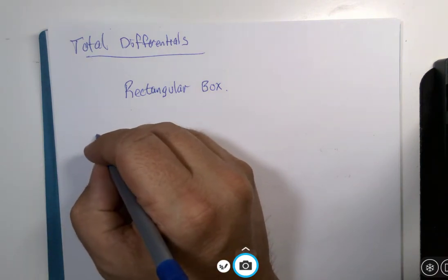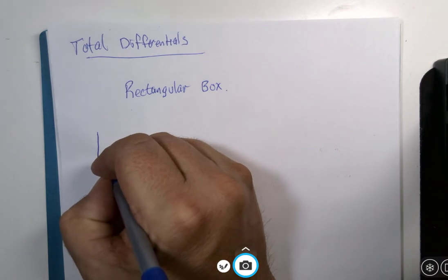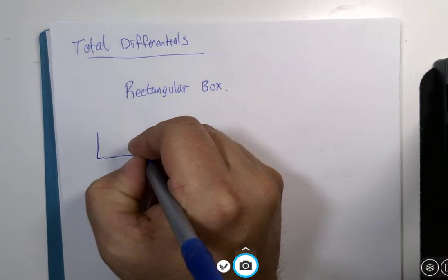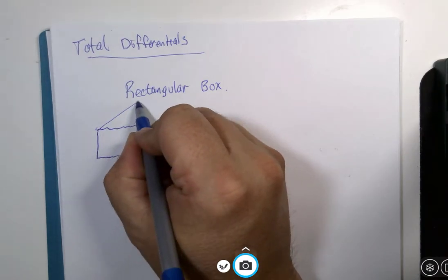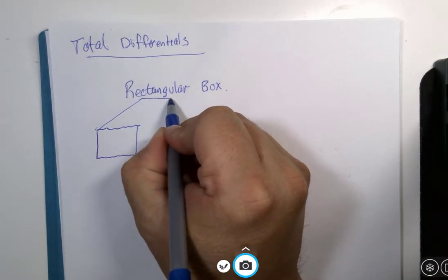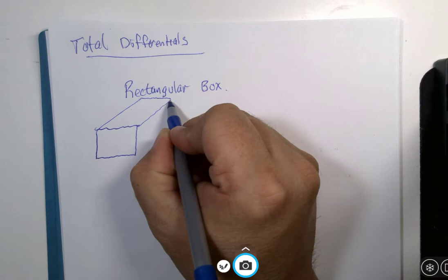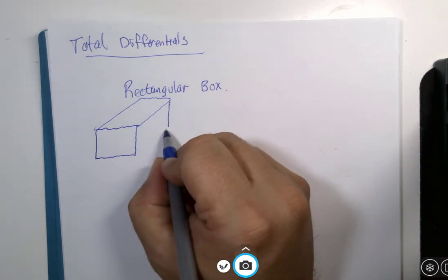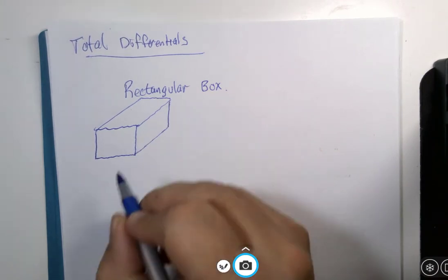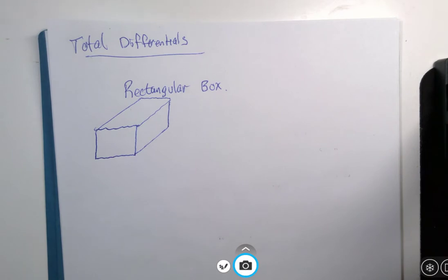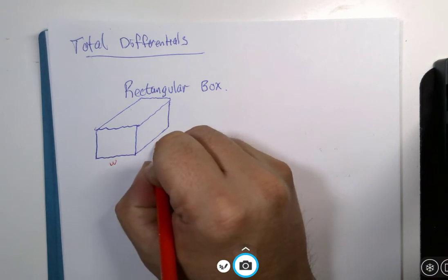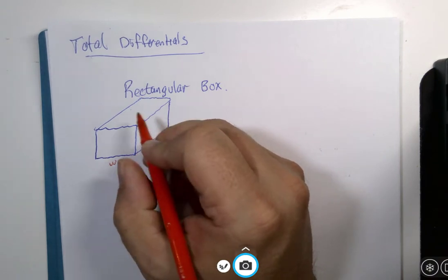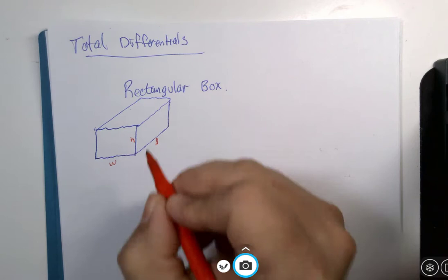So, let's suppose we have a box, a rectangular box. All right, apparently I can't really talk while I'm drawing. Hopefully that passes for a rectangular box. Let's suppose that this is the width of the box and this would be the length of the box and this would be the height of the box.